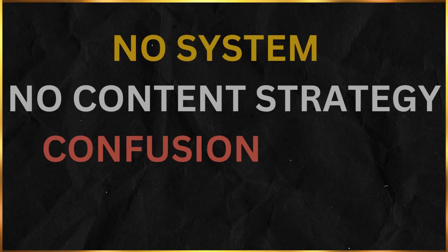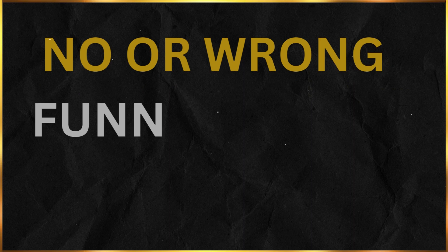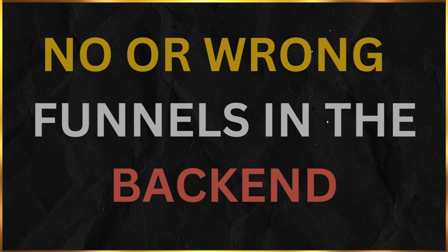What all three characters have in common: there's no system set up in the back end and no real content strategy. If they had those systems in place, everything would be fine — they'd provide the right value at the right time, ask for the sale at the right time, and be consistent.